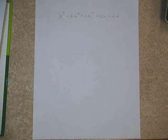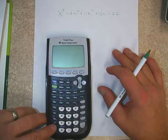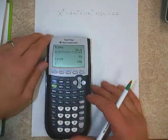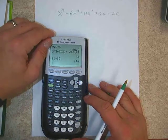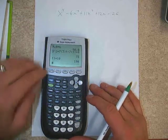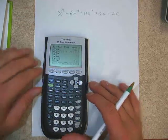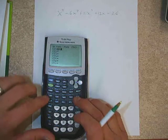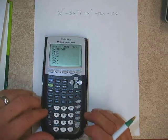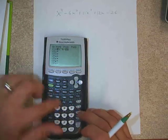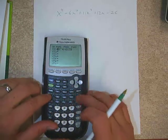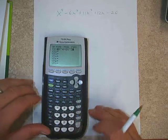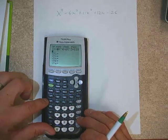Let's try one more. I'm going to give you x to the fourth minus 6x cubed plus 11x squared plus 12x minus 26. This would either be on the calculator part, or we'd be given another piece of information — because watch this: if I were to graph that thing.